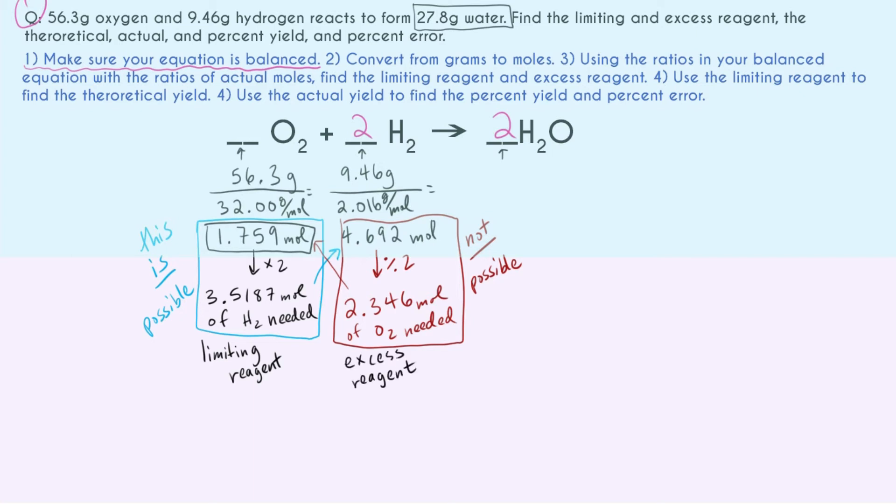So now looking at our problem back at the top, we have now the limiting and the excess reagent and now let's find the yields. So one, we actually have without doing any work. It was just the number that was given to us, the 27.8 grams of water. So this is just saying, we did this reaction in lab and this is just how much we made. It just is here. We ended our reaction and we had 27.8 grams of water. And so this just is the actual yield.